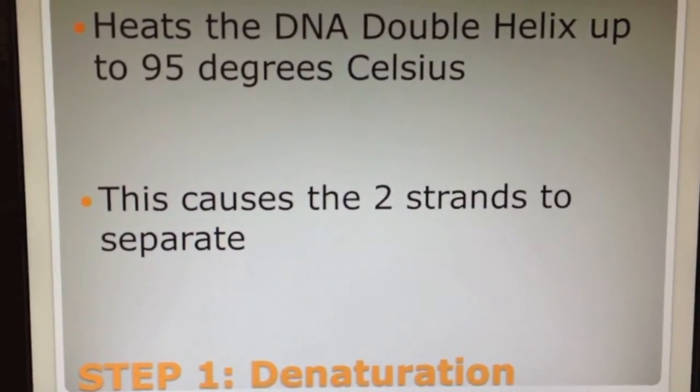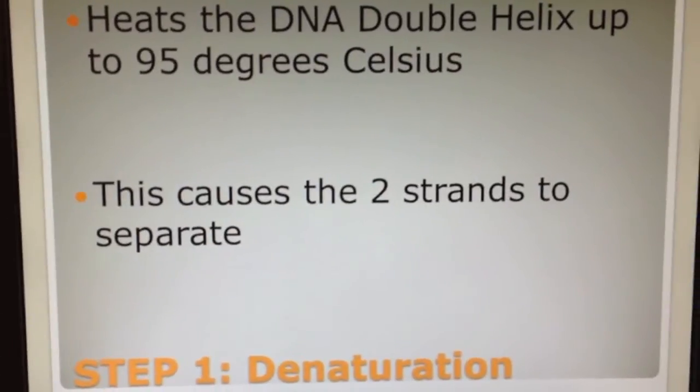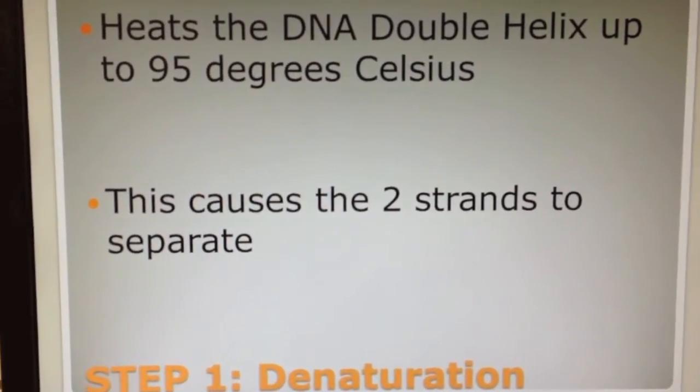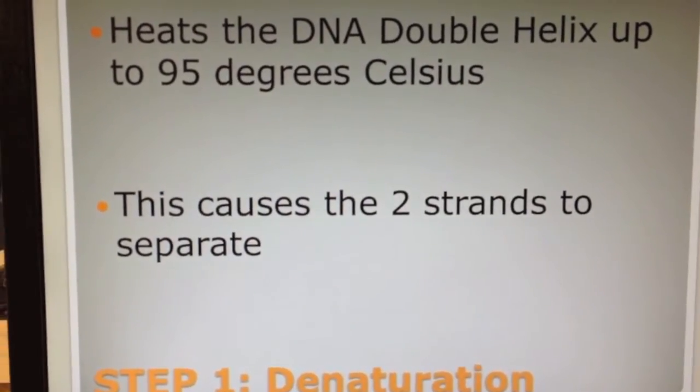The first step is denaturation. In this step, the DNA is heated up to 95 degrees Celsius so the two complementary strands can separate.